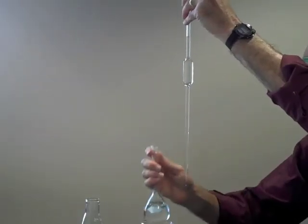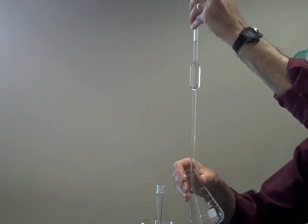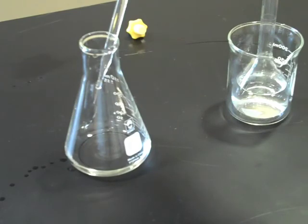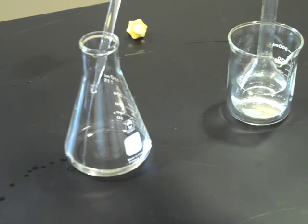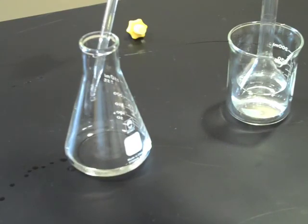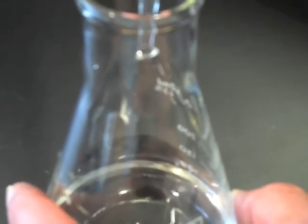Now let the solution drain into the target flask. Once it stops, wait another 10 seconds so that the liquid has drained properly. Then touch off the drip at the bottom of the pipette to the side of the target container. Now you're done making a quantitative transfer.